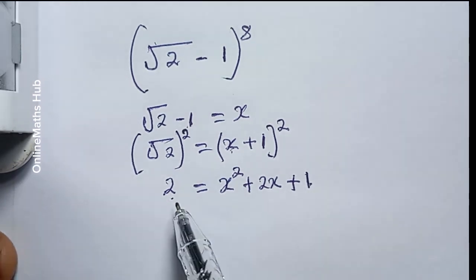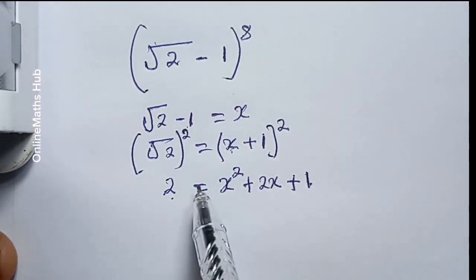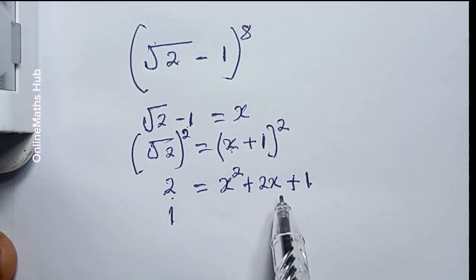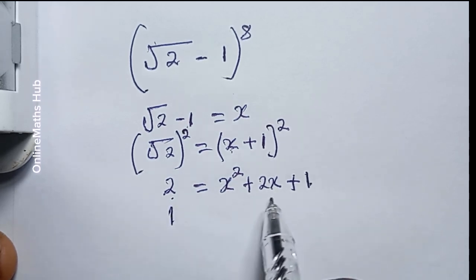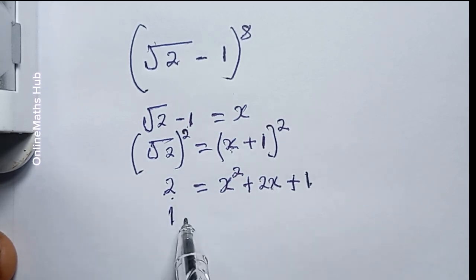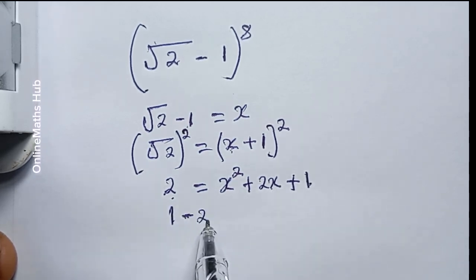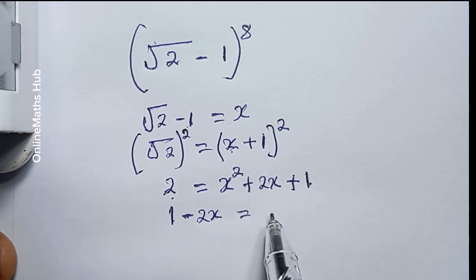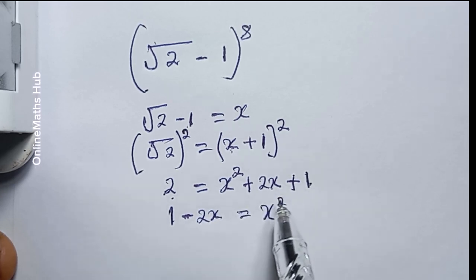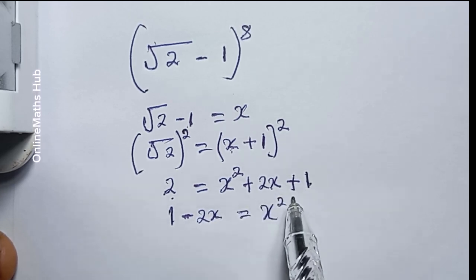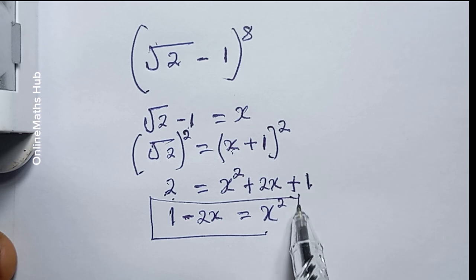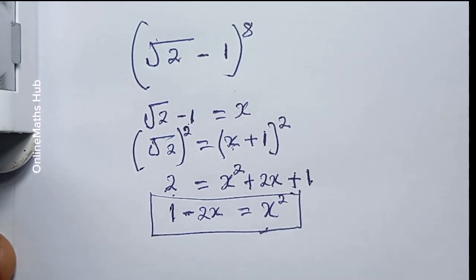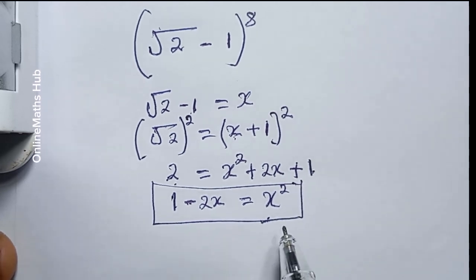I'll move 1 to the left-hand side, giving me 2 minus 1 which is 1, and bring 2x to the left-hand side, so I have 1 minus 2x equals x squared. So x squared is equal to 1 minus 2x.